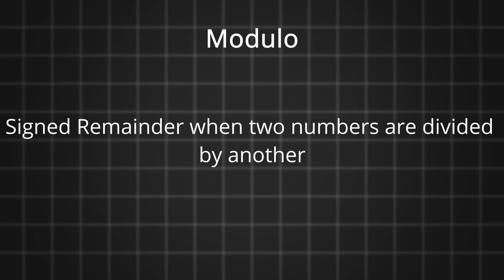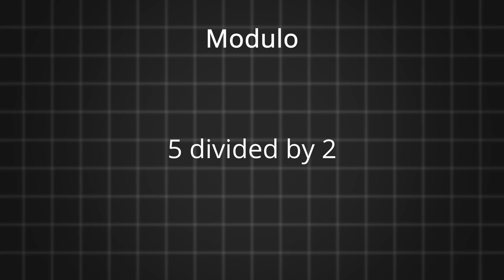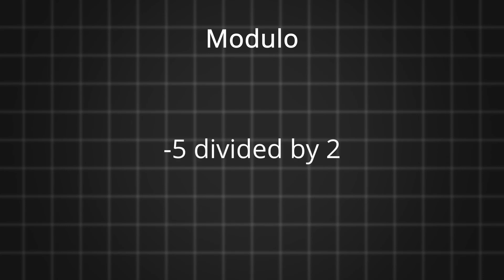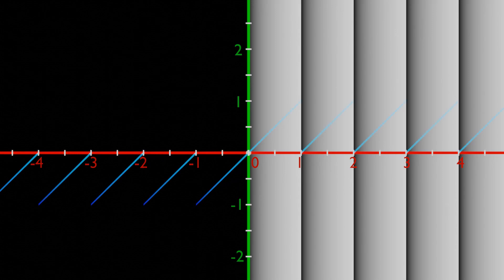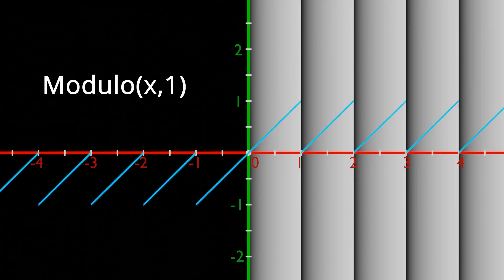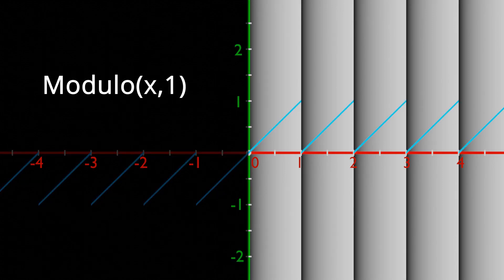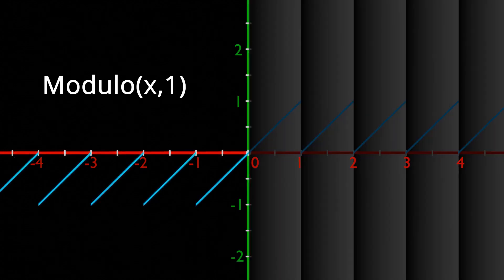The modulo operation outputs the signed remainder when one number is divided by another. For example, when 5 is divided by 2 the remainder is 1, and when -5 is divided by 2 the remainder is -1. It outputs 0 for all multiples of the second input. Graphically, it repeats a linear gradient from 0 up to the value of the second input along the positive x direction, and goes to the negative value along the negative x direction because the remainders are negative.